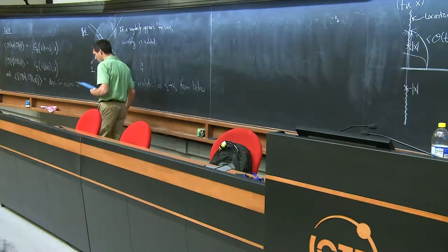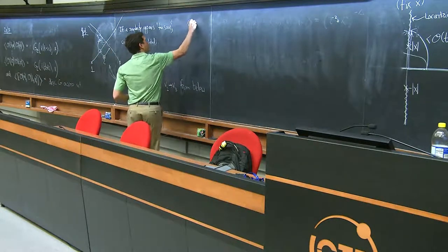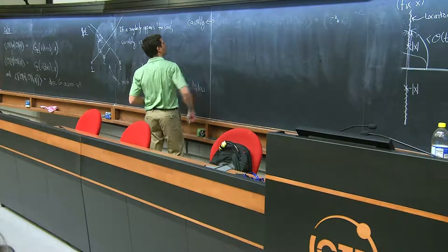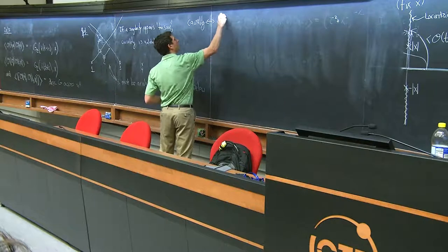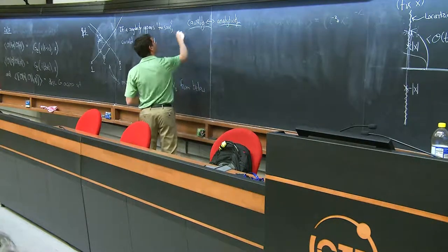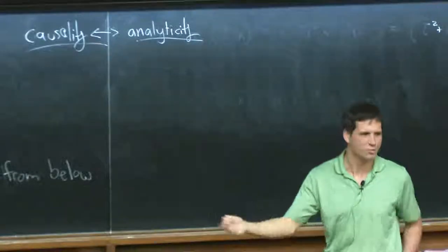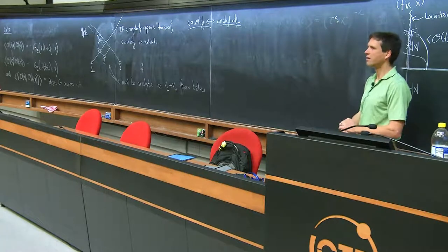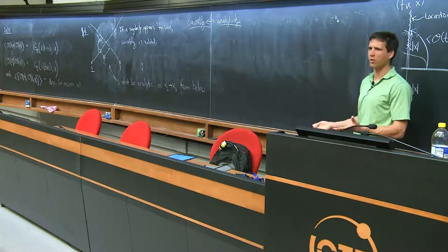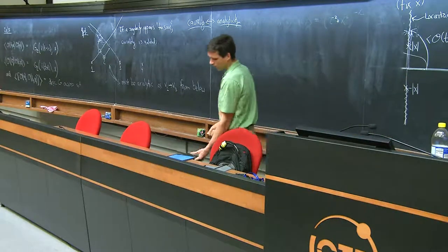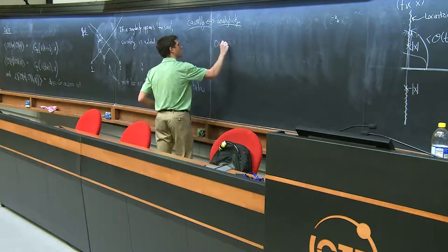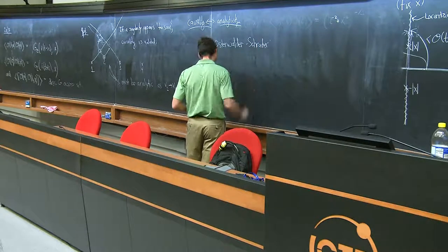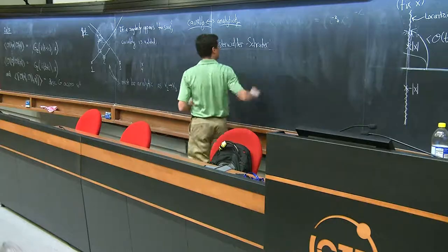The upshot is that causality — usually thought of as commutators vanishing at spacelike separation — is more generally thought of as analyticity. This is analyticity in complexified position space, distinct from analyticity of the S-matrix. Causality is a statement about where correlation functions are analytic.